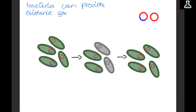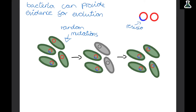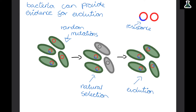Bacteria can provide evidence for evolution. Bacteria randomly develop mutations in their DNA — this is the variation we spoke of earlier. We can see that a blue part added to the DNA is a mutation. Let's say this blue part provides the bacteria with resistance to antibiotics. The one that is all red has no resistance, but the one with the blue does. Natural selection then happens — if the bacteria come into contact with antibiotics, the resistant ones survive and the non-resistant ones die off. The resistant ones then reproduce, meaning evolution happens over time and the species of bacteria all become resistant.